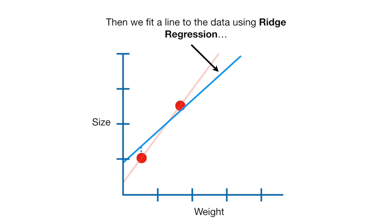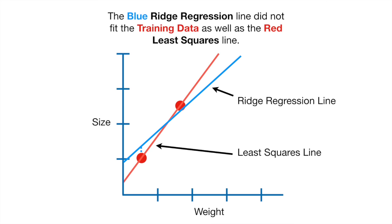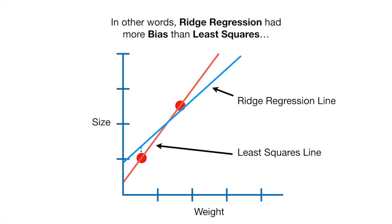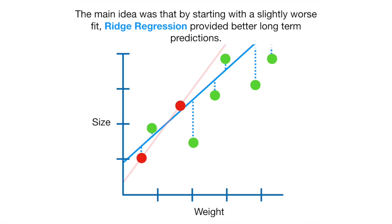Then we fit a line to the data using Ridge Regression. We minimized the sum of the squared residuals plus lambda times the slope squared. Ridge regression is just least squares plus the Ridge Regression penalty. The blue Ridge Regression line did not fit the training data as well as the red least squares line. In other words, Ridge Regression had more bias than least squares. But in return for that small amount of bias, the Ridge Regression line had a significant drop in variance. The main idea was that by starting with a slightly worse fit, Ridge Regression provided better long-term predictions.